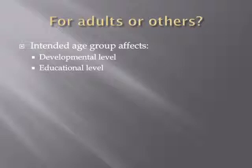The first and easiest way to break down the intended audience of an information source is by age group. An information source intended for children or adolescents won't give you the advanced concepts and dense details about a topic that you need for academic research. Those materials are simplified and embellished to appeal to a younger developmental stage and grade level.